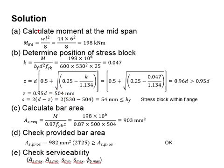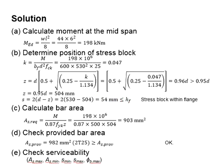Next, you need to find the position of the stress block by using this equation. The outcome is 54 mm, which is less than the height of the slab of 150 mm. Therefore, you know that the stress block is within the flange.